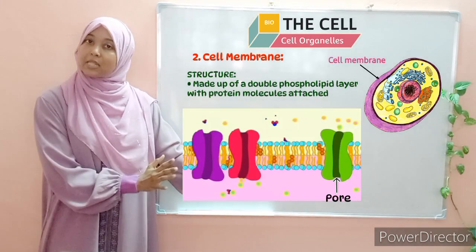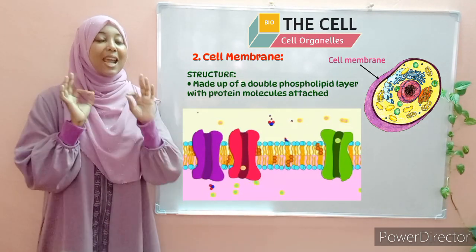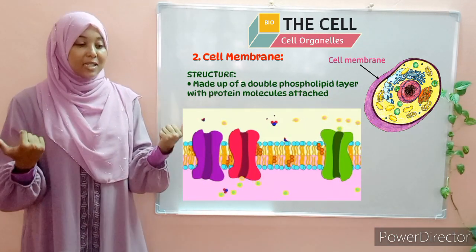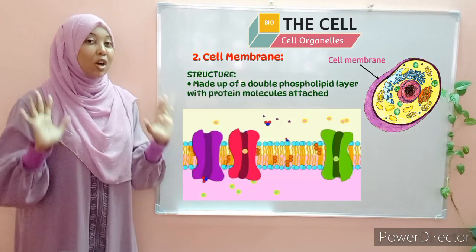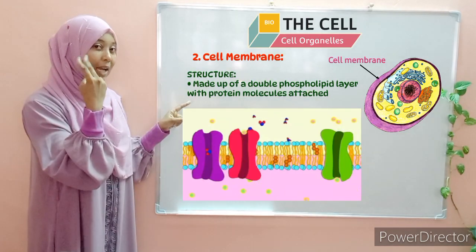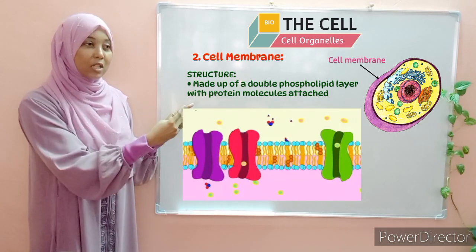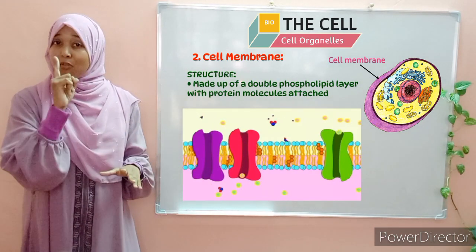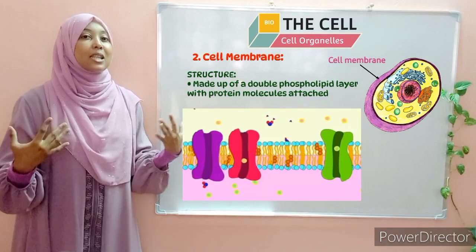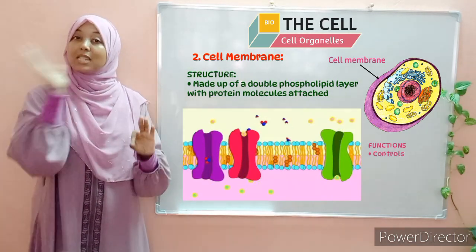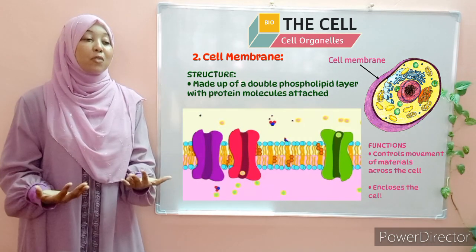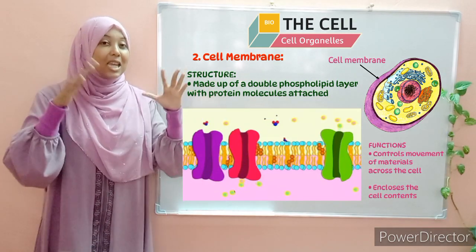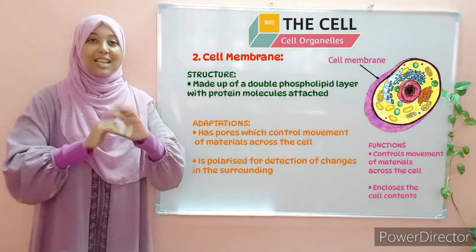If a molecule is small enough, it can pass across; if it is large, it cannot. The good thing is anything that is of importance to the cell can easily pass across, as it has the appropriate size. That is the structure of the cell membrane: a double phospholipid layer with protein molecules attached to it, and in between the protein molecules we have a pore. The function of the cell membrane is tied to its semi-permeability — it controls the movement of materials in and out of the cell. Another function is that it encloses the contents of the cell and therefore protects the inner parts of the cell.